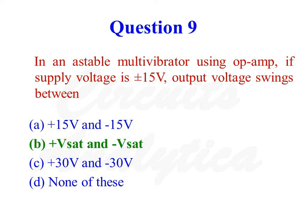In an astable multivibrator using an op-amp, if the supply voltage is plus or minus 15 volts, the output voltage swings between plus Vsat and minus Vsat. Here, plus Vsat is slightly less than plus 15 volts and minus Vsat is slightly greater than minus 15 volts — for example, approximately plus 14 volts and minus 14 volts. So the correct answer is the second option, plus Vsat and minus Vsat.